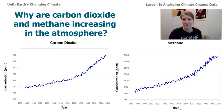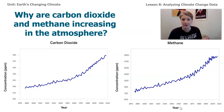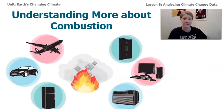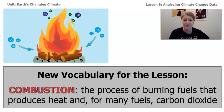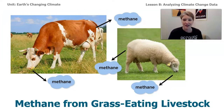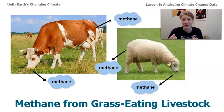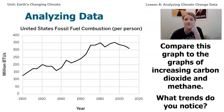Today's lesson will be analyzing actual data to see if there is a connection between what humans are doing on our planet and how carbon dioxide and methane are changing. In the last lesson, we learned about combustion — the process of burning fuels that produces heat and, for many fuels, carbon dioxide. We also discovered that cows and sheep eating grass produce methane, a gas that causes energy to be redirected in the atmosphere back toward Earth.